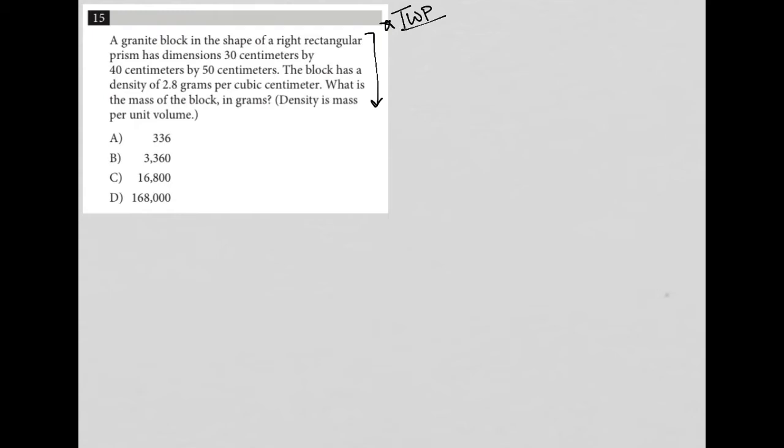So this question says a granite block in the shape of a right rectangular prism has dimensions 30 centimeters by 40 centimeters by 50 centimeters. So I'm going to draw a right rectangular prism, which is just a three-dimensional rectangle. I'm going to draw my rectangle this way. And maybe I shouldn't draw it that way, actually, because usually when dimensions are given, by the way, it's in the order of length and then width and then height.